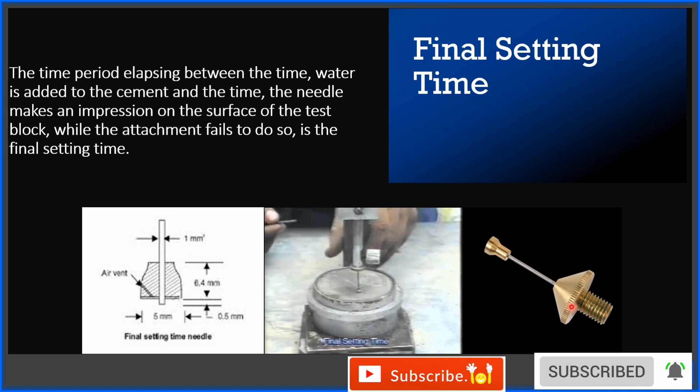We have to replace the previous needle with a needle like this, a needle with an annular ring. Final setting time is noted as the time when the needle makes an impression on the test block but the outer ring fails to do so. Then that is known as final setting time.